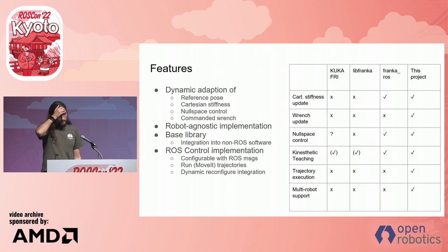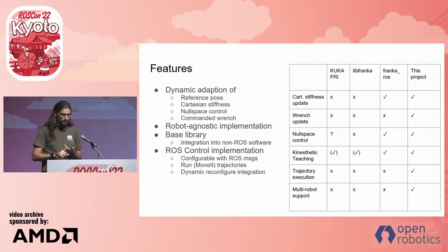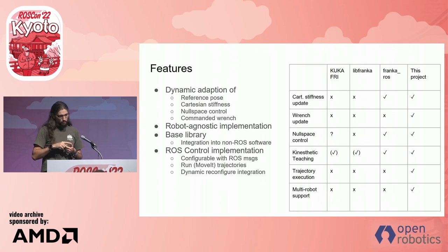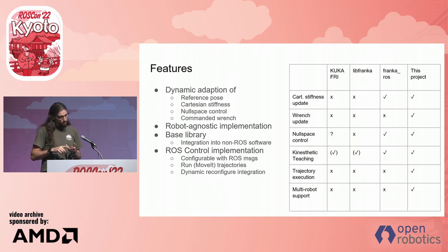The C++ implementation we have made has the following features: we can dynamically adapt the reference poses where the robot arm should go, dynamically change the Cartesian stiffness, do null space control, and apply forces on the environment. It's also robot agnostic — we just read out the torques and set up everything. We implemented a base library that can be integrated into non-ROS software, and we have a ROS control implementation configurable with ROS messages. We can run movement trajectories and have a dynamic reconfigure integration.